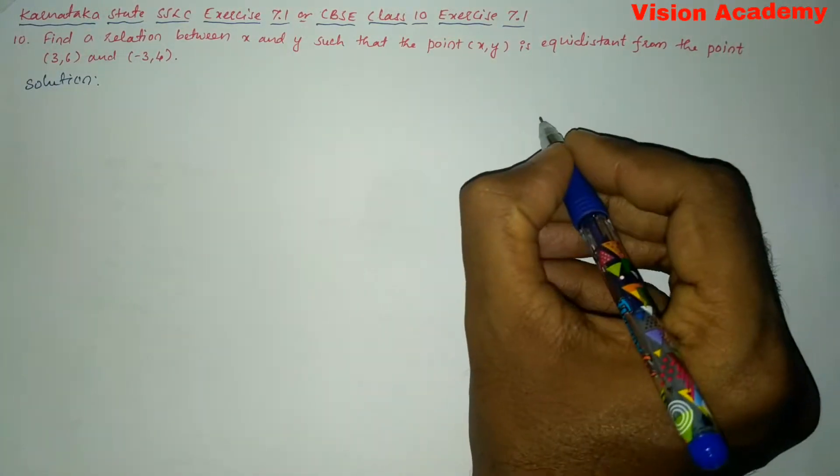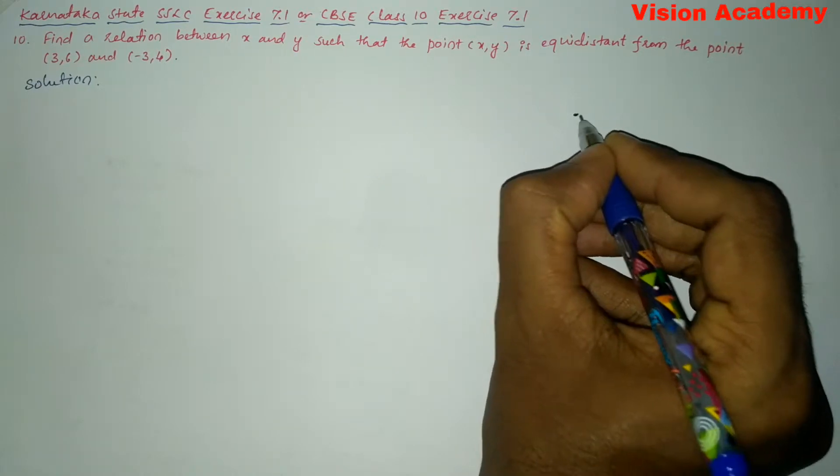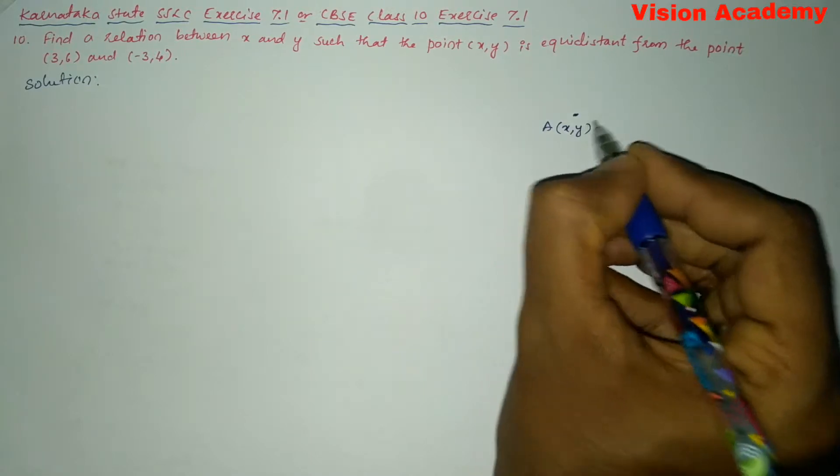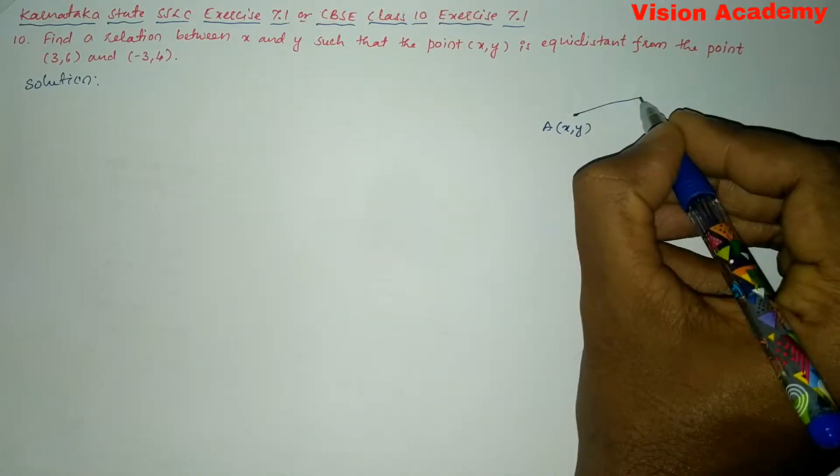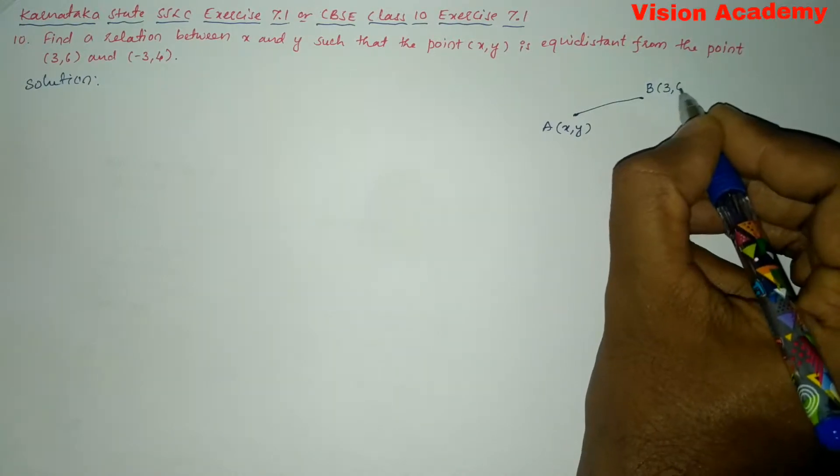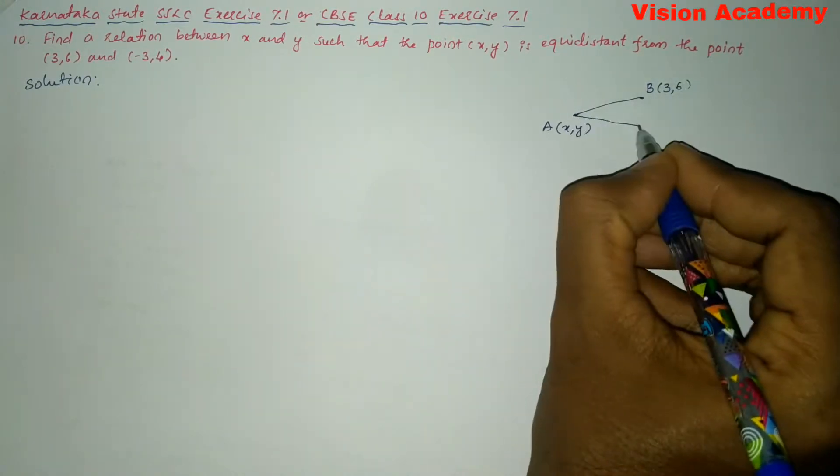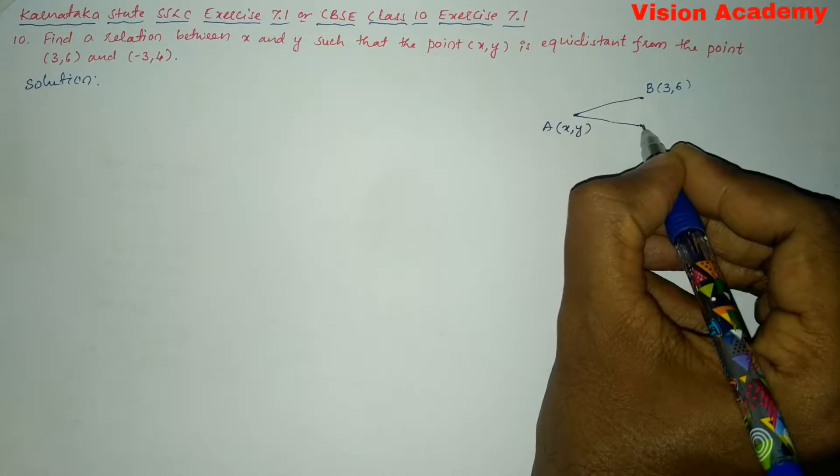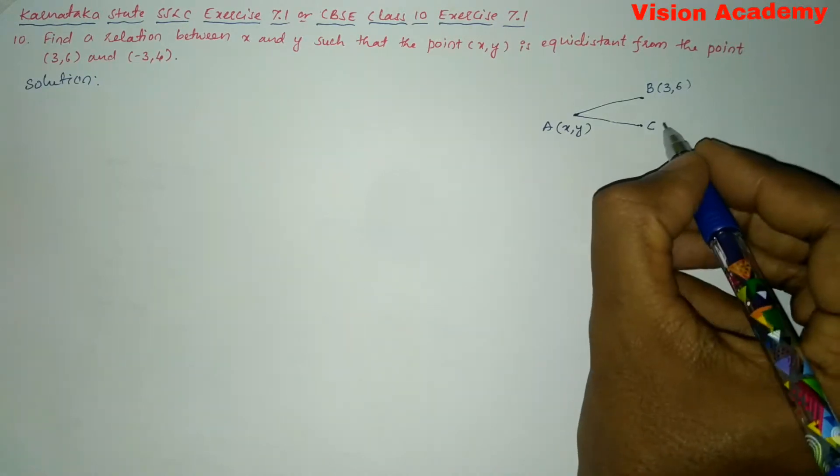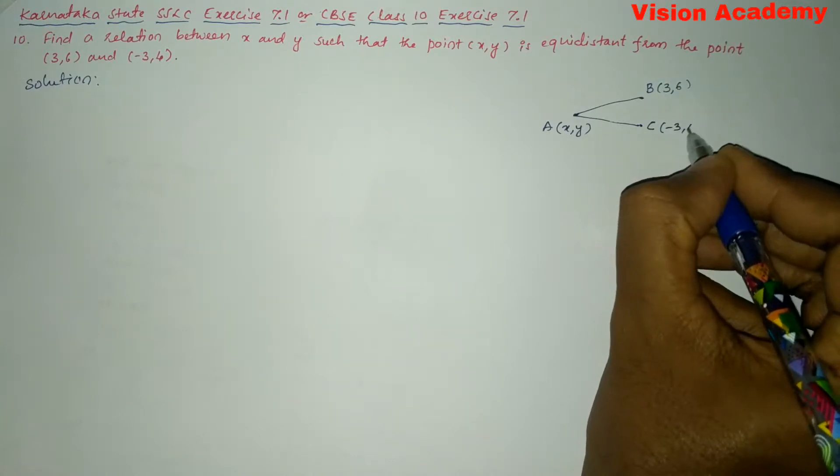Here let us write one point whose coordinates are A(X, Y), and let us write one more point called B whose coordinates are (3, 6), and one more point which is equidistant, C, whose coordinates are (-3, 4).